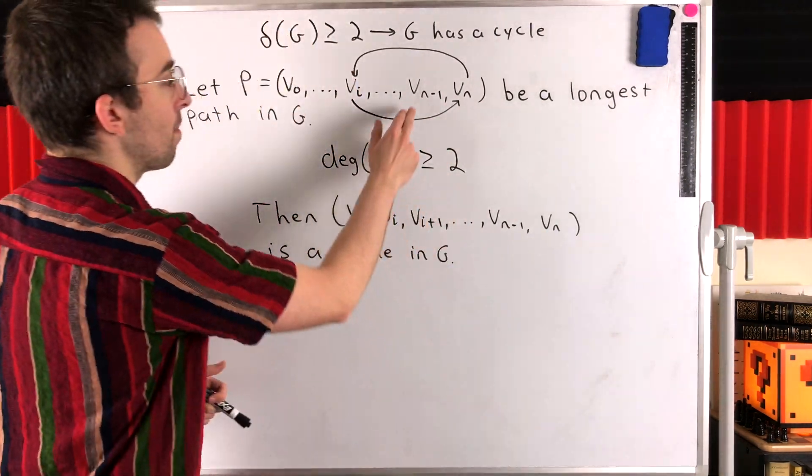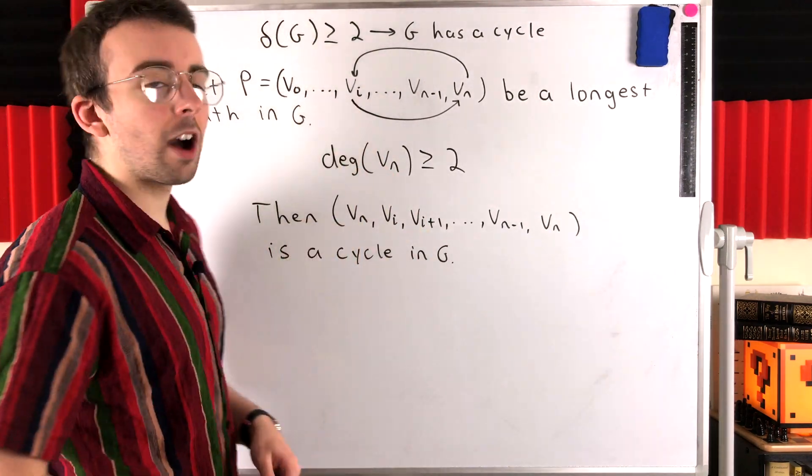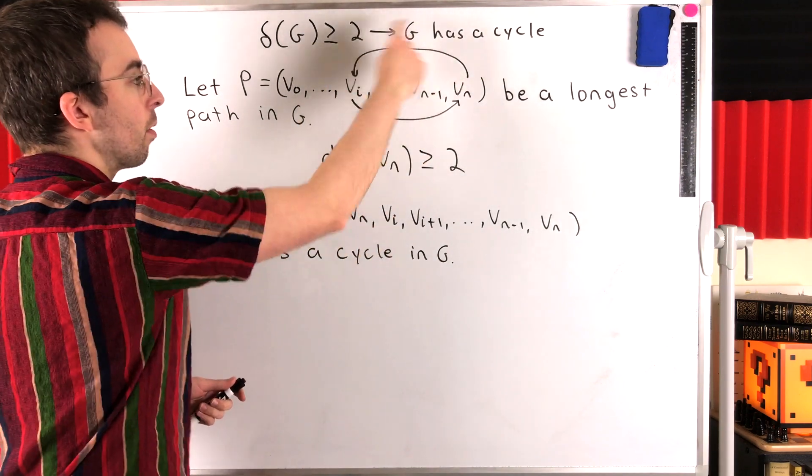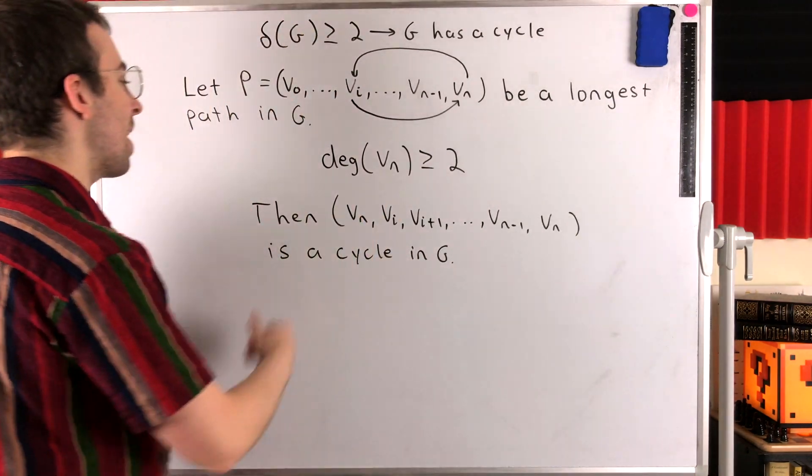Among its other neighbors on the path, besides VN minus one, let's pick one of them, call it VI. Then we can go from VN to that neighbor VI, proceed along the path back to VN. That is our cycle.